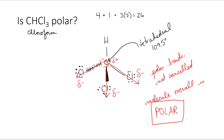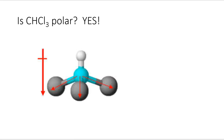There it is. The hydrogen is here and the chlorines are here. Overall, the molecule has those chlorines sort of pointing down and it pulls the electron density down towards itself. So yes, chloroform is a polar molecule.